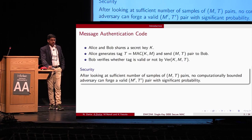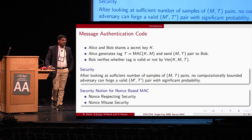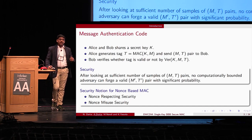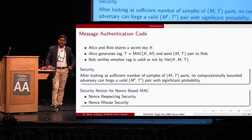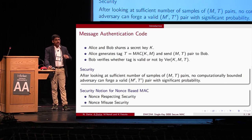There are two types of security notions for a nonce-based MAC. One is nonce-respecting security, in which the adversary is not allowed to repeat any nonces while making MAC queries. The other is nonce-misuse security, where the adversary is not bound by this rule; however, the adversary can repeat nonces while making verification queries.